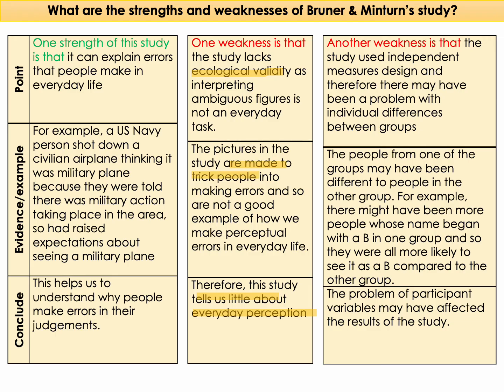Finally, the fact that an independent measures design was used means there may have been issues with individual differences between groups. For example, one group might have contained people whose names began with B, making them more likely to see the letter B, or the other group could have contained maths teachers who regularly work with numbers and were therefore more likely to see the number 13. Participant variables might therefore have affected the results.